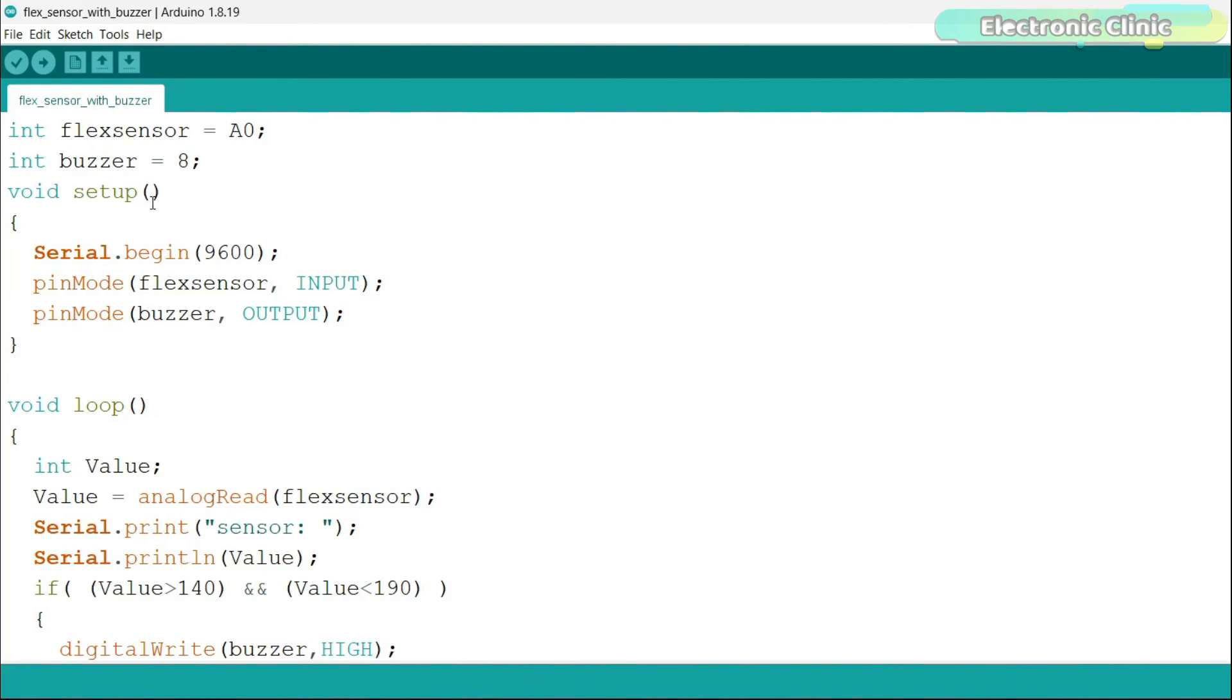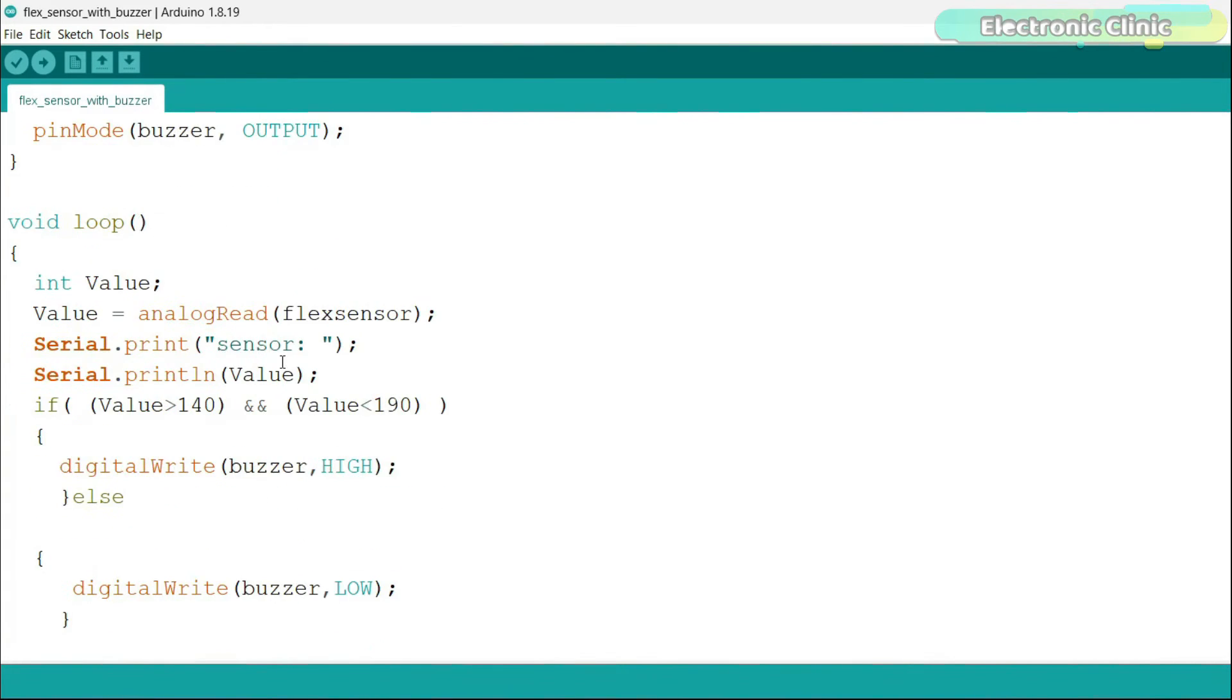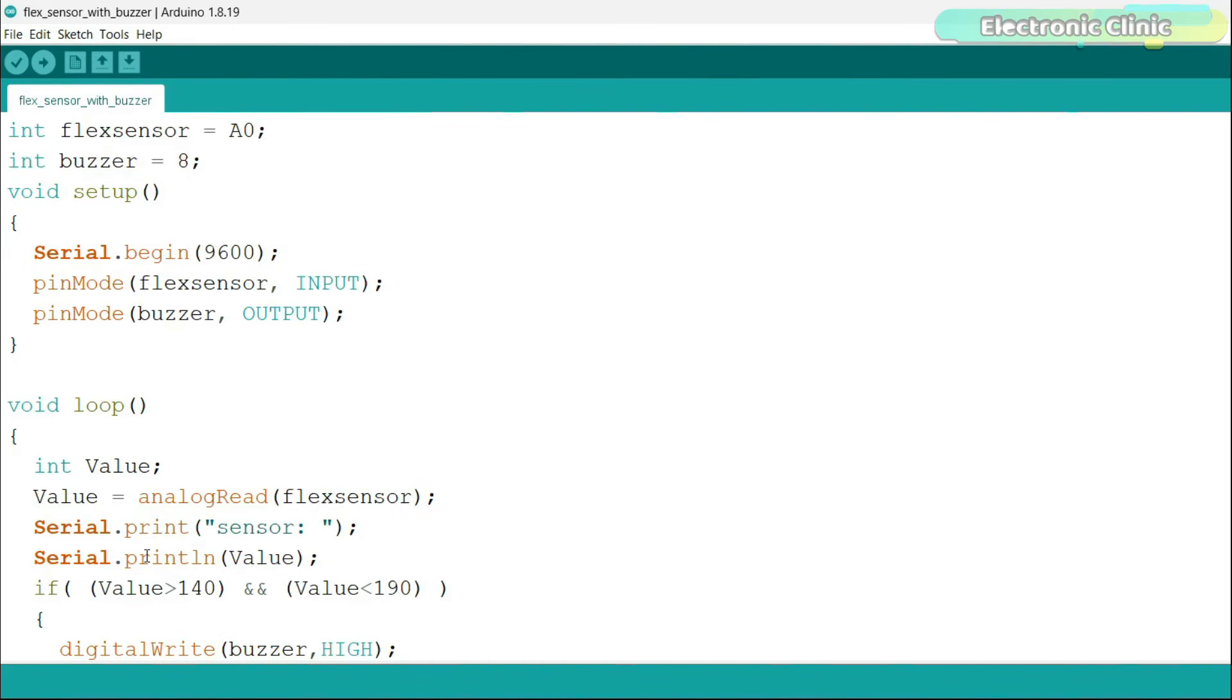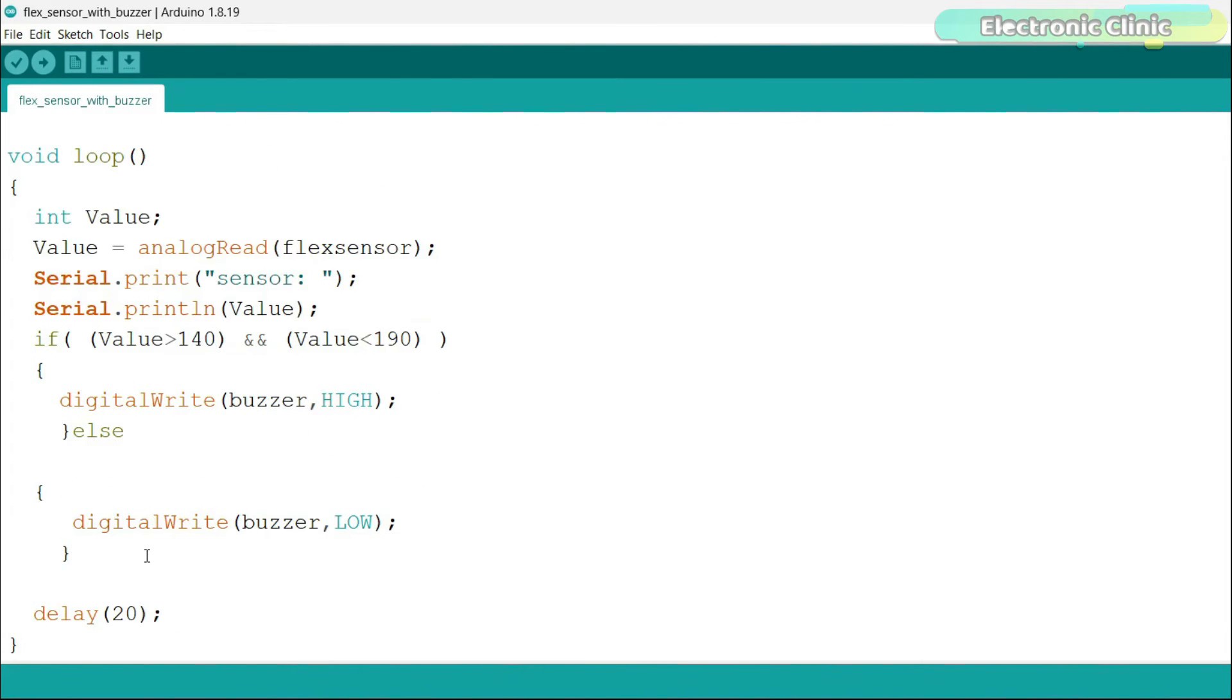I simply modified the previous code. I defined a pin for the buzzer, and in the void setup function, I set the buzzer as output. In the loop function, I added an if condition that turns on the buzzer when the sheet bending crosses a certain limit. I have already uploaded this program, and now let's watch the sheet bending monitoring system in action.